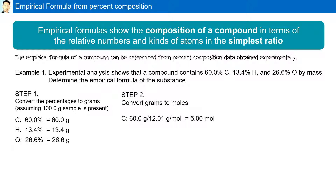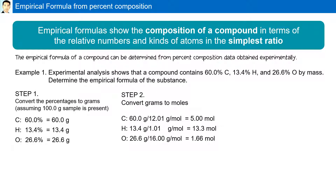60 grams divided by 12.01, the molar mass of carbon, equals 5 moles. Hydrogen: 13.4 grams divided by 1.01 is 13.3 moles. Oxygen: 26.6 grams divided by 16, the molar mass of oxygen, is 1.66 moles. Our current formula is C5H13.3O1.66.